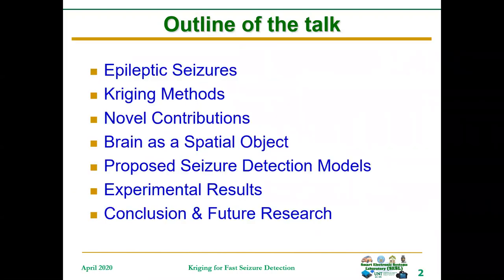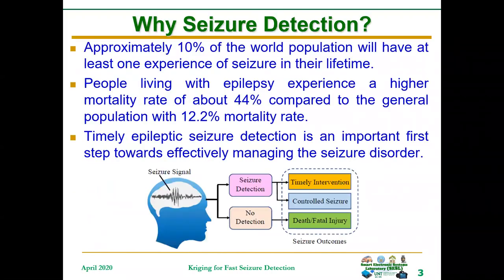Here is the outline of my talk. Why do we need seizure detection? Approximately 10% of the world population will have at least one experience of seizure in their lifetime — that is a whopping 800 million people all over the world. That is why we need to pay attention to this problem of epileptic seizure in the human race.